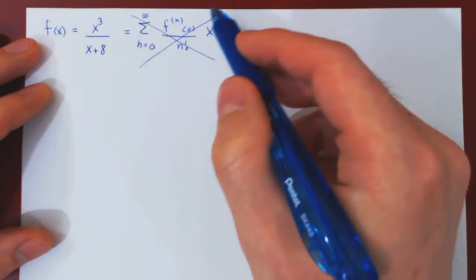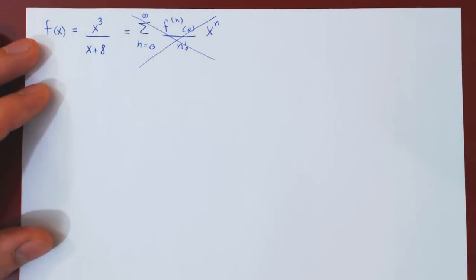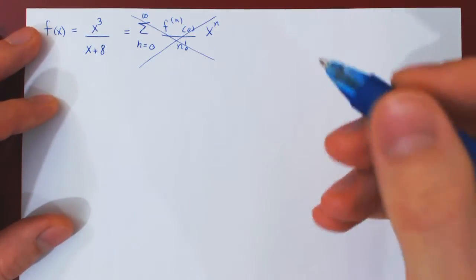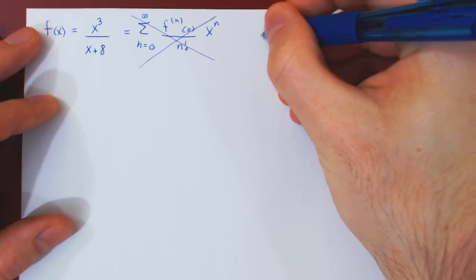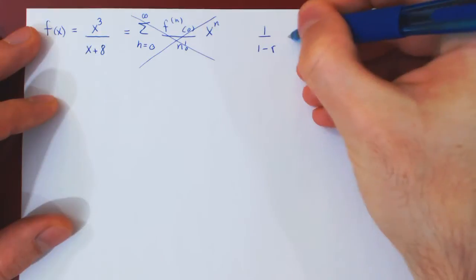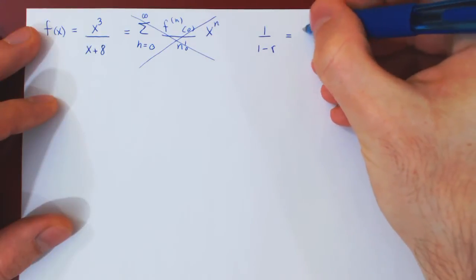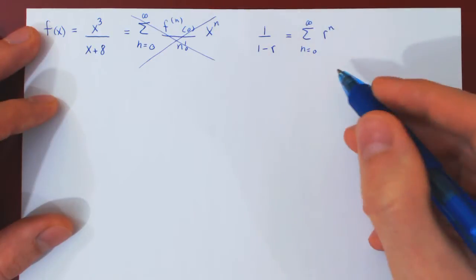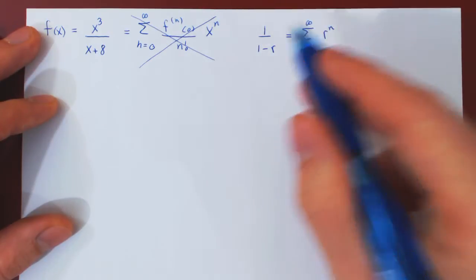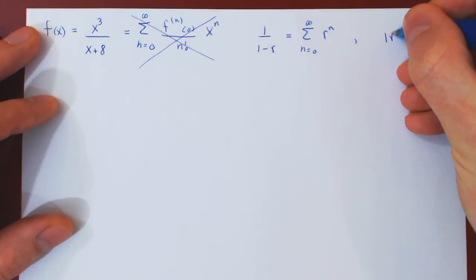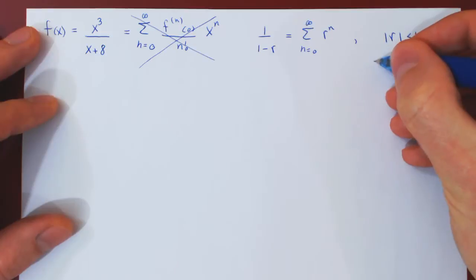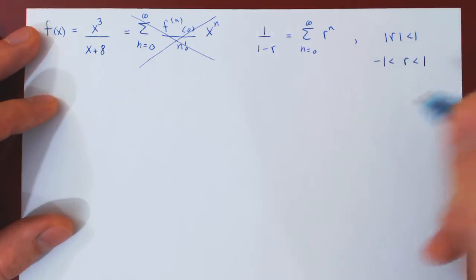So here we will go around it and use a different method, namely, basic knowledge of geometric series. All we have to remember here is that 1 over 1 minus r, we know is the sum, when n goes from 0 to infinity, of r to the n. But of course this result is only valid if the absolute value of r is strictly less than 1, which means that r lies strictly between negative 1 and 1.